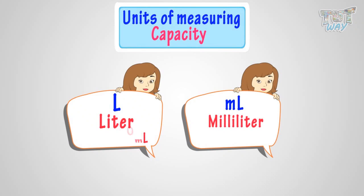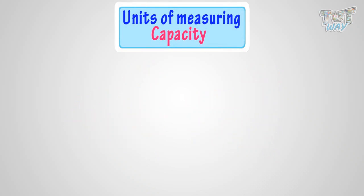Kids, one liter equals 1,000 milliliters. Now, let's see how much quantity is one milliliter. This small container can hold at most one milliliter of water. So, its capacity is one milliliter.